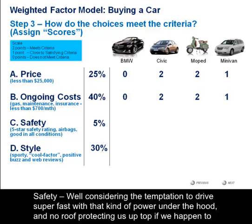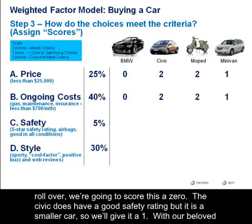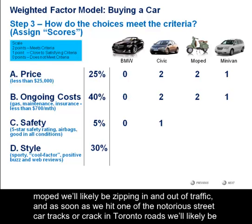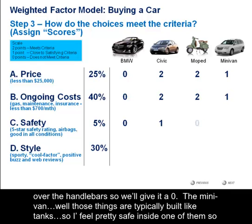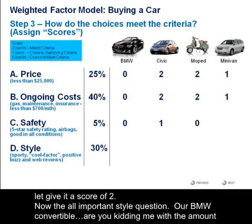Safety. Well, considering the temptation to drive our BMW super fast with that kind of power under the hood and the fact we don't have a roof protecting us if we should roll over, we're going to score that a zero. The Civic does have a good safety rating, but it's a smaller car, so we're going to give that a one. With our beloved moped, we're going to be likely zipping in and out of traffic, and as soon as we hit one of those notorious Toronto streetcar tracks, we're likely going to go over our handlebars — so we're going to give that a zero. And the minivan — those things are typically built like tanks, so I feel pretty safe inside one of them — so I'm going to give those a score of two.